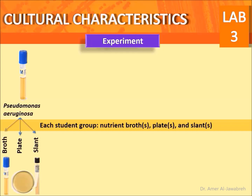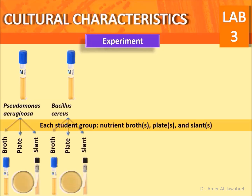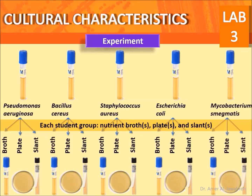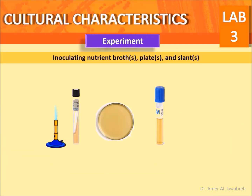Each group is provided with one nutrient broth, one plate, and one slant for each organism. Inoculate broths, plates, and slants as described in lab 2. Briefly: inoculate slants with a sterile needle in a single line streak of each culture provided, starting at the butt and drawing the needle up to the center of the slanted agar surface.